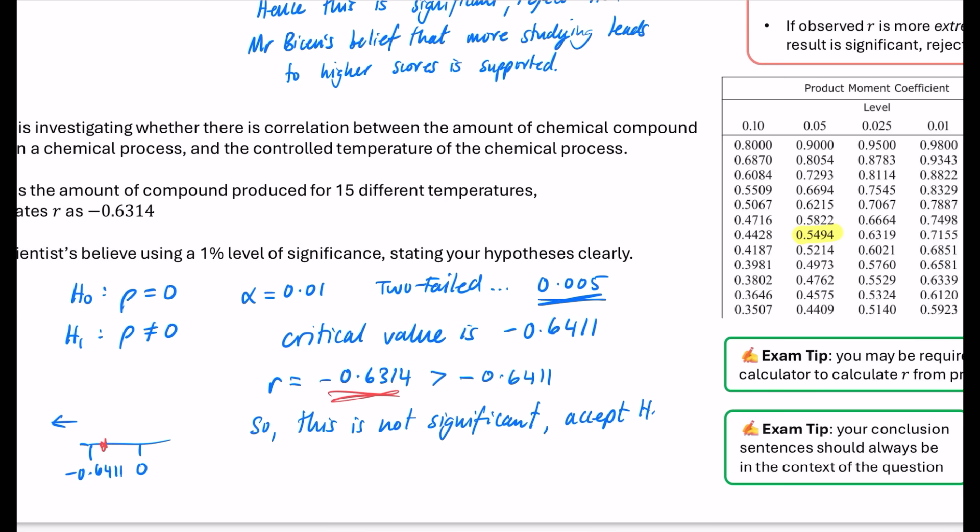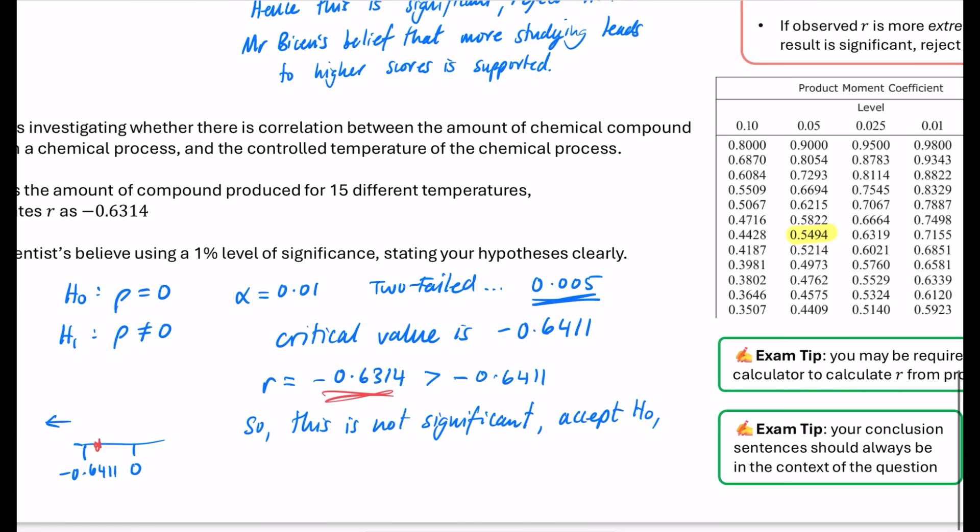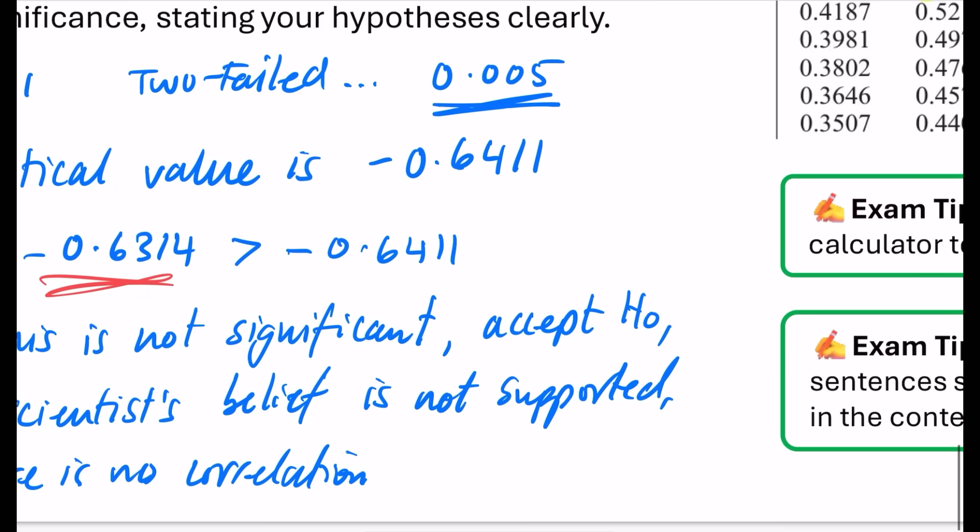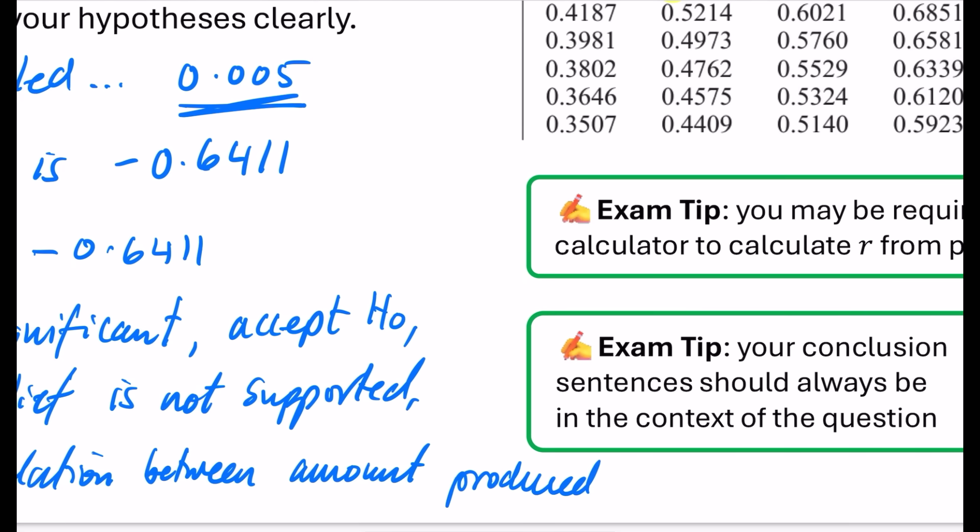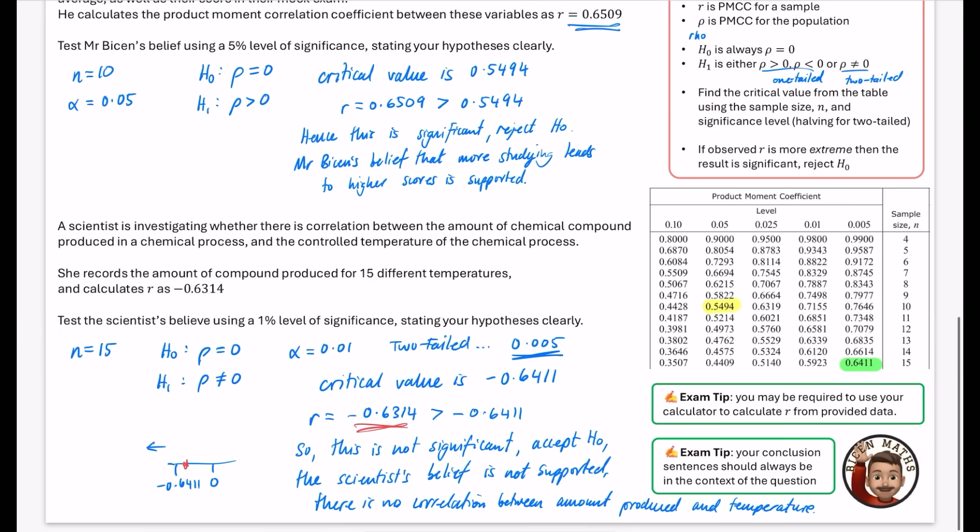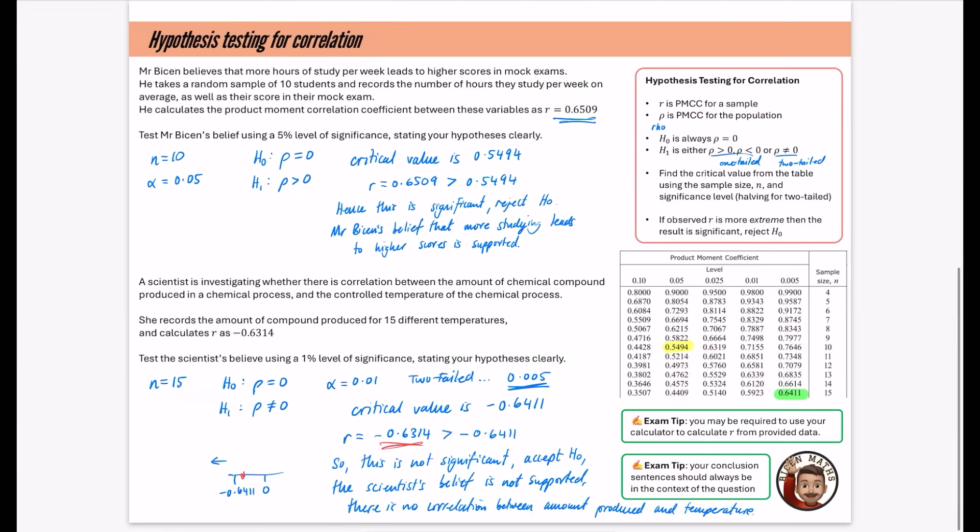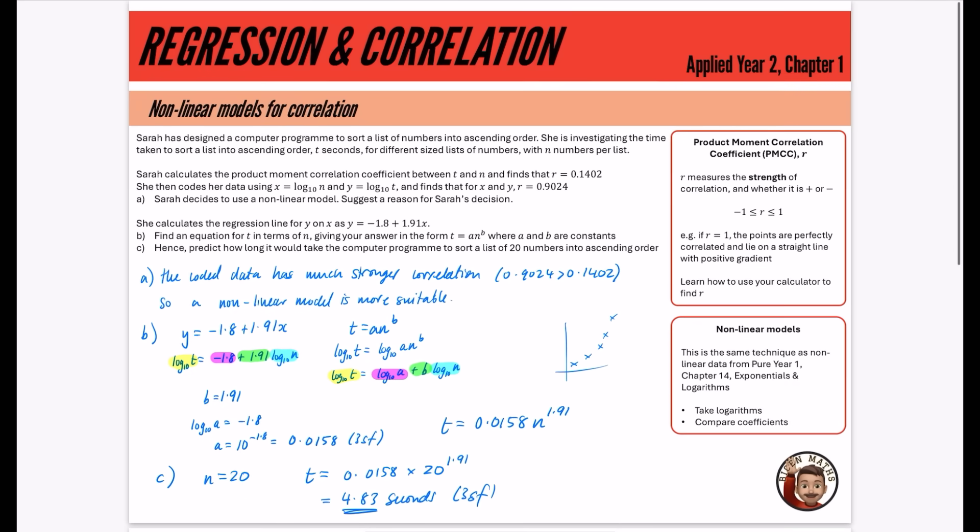This is not significant. We will accept H0. The scientist's belief is not supported. There is no correlation between amount produced and temperature. And if I was in the exam, I would probably write a lot more detail. I would say, there is no correlation between the amount of chemical compound produced and the controlled temperature of the chemical process. Both of those would just be a three mark question. They will usually be a part of something else in a statistics exam as well. That's everything from chapter one. I will hope to see you in another video soon.